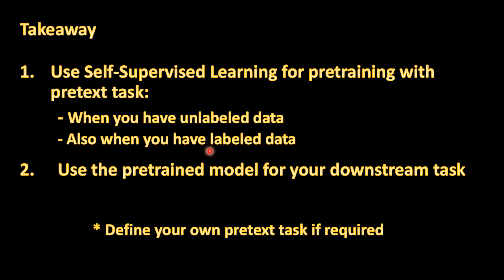There are many self-supervised learning methods already in the literature — from text, images, videos, and videos with sound — which we'll discuss in the next video. The key takeaway is that we can use self-supervised learning for pre-training with a pretext task or metric learning like SimCLR, whether you have unlabeled data or can treat labeled data as unlabeled. You then use the learned representation to initialize your model for the downstream task, and you may need to define your own pretext task suited to your specific problem.